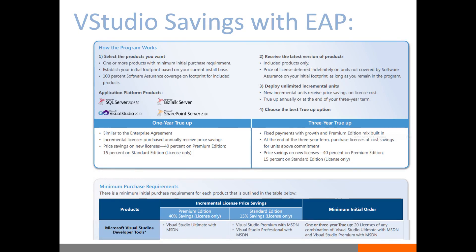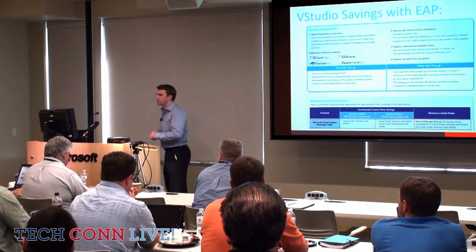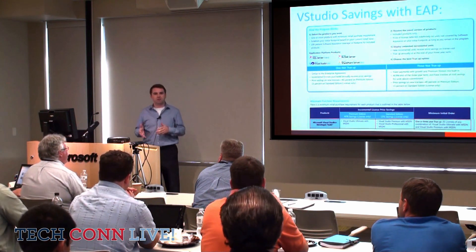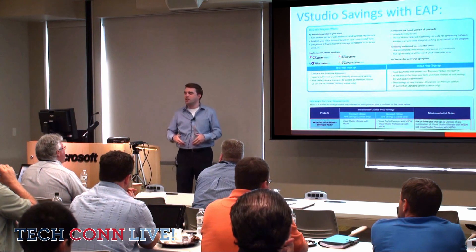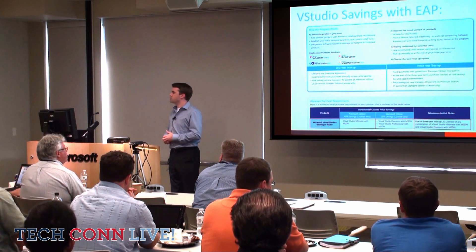In addition to easing management, the EAP delivers significant cost avoidance when adding new Visual Studio licenses. Comparing the cost of adding a Visual Studio license to an EAP versus an Enterprise Agreement, Premium and Pro are at a 15% discount over the EA cost, and about 40% if purchasing versus a Select agreement. For Ultimate, it's a 40% discount versus purchasing on the desktop enrollment. So if your organization has 20 developers using Visual Studio, there's no reason you should not be purchasing those on the Enrollment for Application Platform.